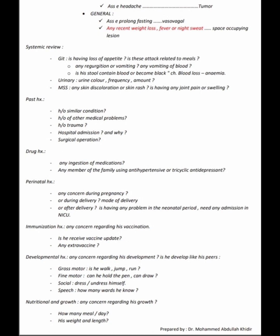From past history, ask about any similar condition, other medical problems, history of trauma, hospital admissions, and surgical operations. For drug history, ask about any medication ingestion, whether any family member uses antihypertensives or tricyclic antidepressants. For perinatal history, ask about any concerns during pregnancy, mode of delivery, or problems in the neonatal period requiring ICU admission.